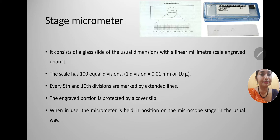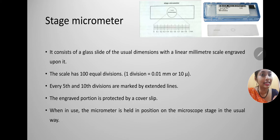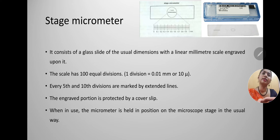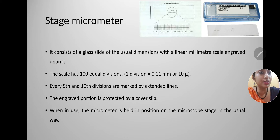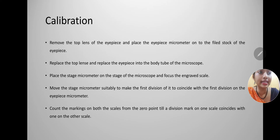The stage micrometer consists of a glass slide of usual dimensions with a linear millimeter scale engraved on it. The scale has 100 equal divisions, so the total scale is 1 mm and each division is 0.01 mm or 10 microns. Every fifth and tenth division are marked by extended lines. The engraved portion is covered with a cover slip, and when in use the micrometer is held on the stage of the microscope like a normal slide. In the image you can see the stage micrometer with 1 mm etching having 100 gradations. It is usually kept protected in a plastic box.